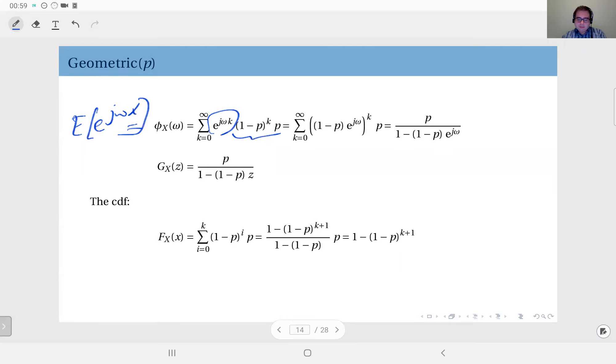Again here I'm going to write this as 1 minus p times e to the power jω, and then together raised to power k. I have the p here, and this gives me...well, one thing you should know here: